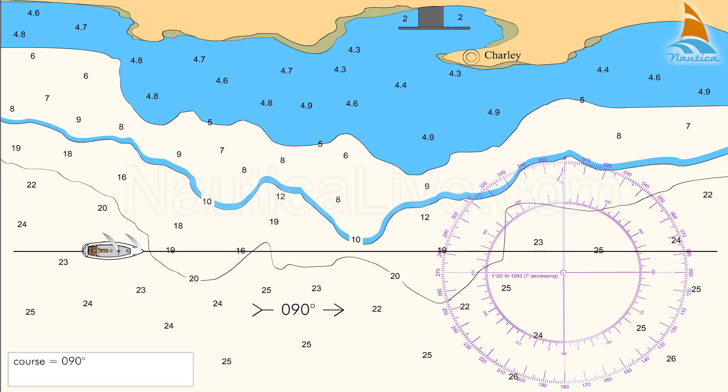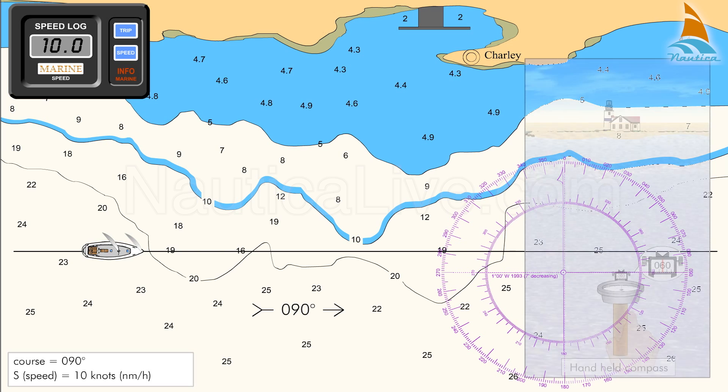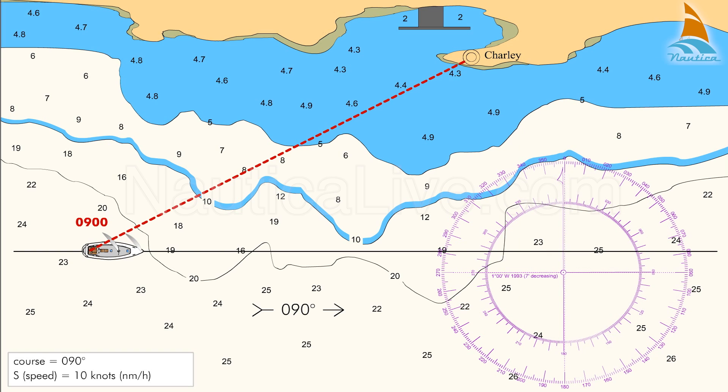Assuming the course is 090 degrees and the speed is 10 knots or 10 nautical miles per hour, we take a bearing of 060 degrees of the Charlie radio tower at 0900 or 30 degrees from the bow.